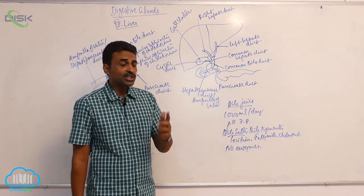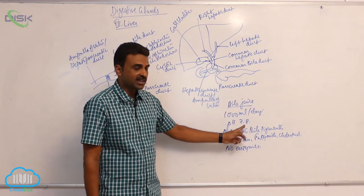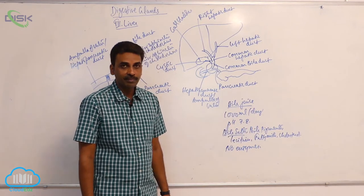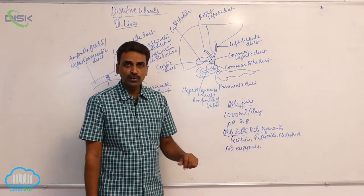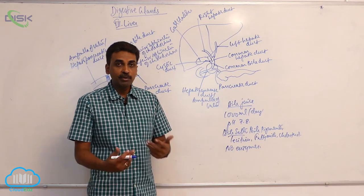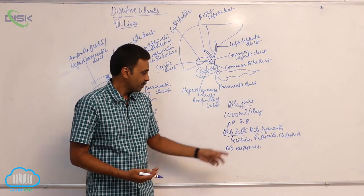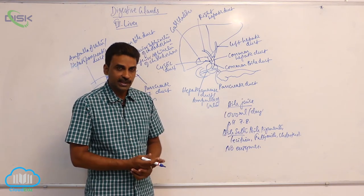Now, what is the composition of bile? It includes bile salts, bile pigments, and lecithin. Lecithin is also useful at the time of emulsification of fats. Bile salts are also useful for the same process.